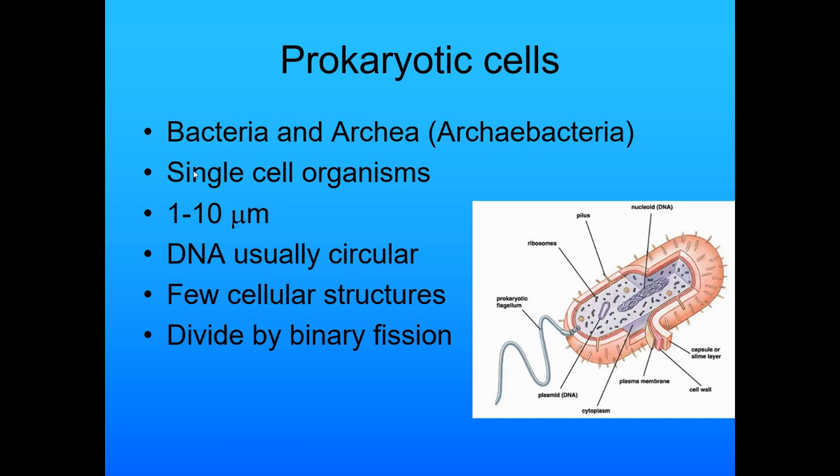When you look at prokaryotic cells — those are the bacteria and the archaea — they're single-celled organisms between 1 and 10 micrometers in size. When you look at that little millimeter mark, it's thousands to hundreds of that. The DNA is usually circular. There are very few cellular structures on the inside, and they divide by binary fission.